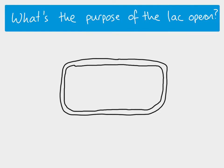Here's our E. coli bacteria. This bacteria would usually use glucose as its respiratory substrate, so it would take glucose from the environment, take it into the cell and use it. However, sometimes there isn't any glucose present, and in this case it would need to use something else.